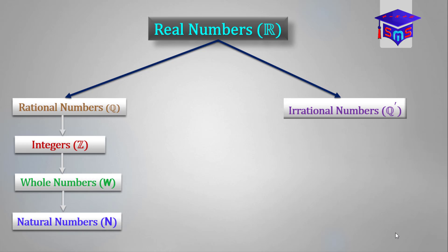Now let's talk about them beginning from the natural numbers. The natural numbers begin from 1 to positive infinity. They are also called counting numbers. Remember when you were in kindergarten? You've been saying this over and over again — counting numbers: 1, 2, 3. Yes, that is the set of numbers we are talking about.